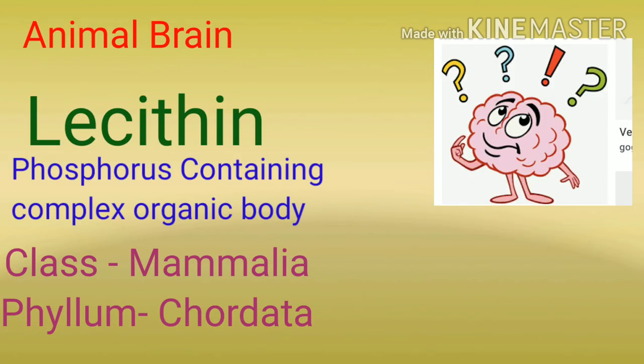अब हम बात करेंगे animal brain से बनने वाली medicine Lecithin के बारे में, जो कि a phosphorous-containing organic compound है। Class Mammalia और phylum Chordata।